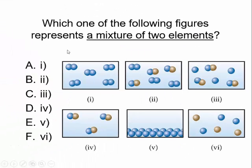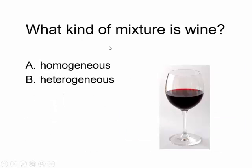Here's a clicker question — or rather, a question I use as a clicker question in class. Which one of these represents a mixture of two elements: 1, 2, 3, 4, 5, or 6? What do you think about that? I'll also ask a question about types of mixtures: is wine an example of a homogeneous mixture or a heterogeneous mixture?